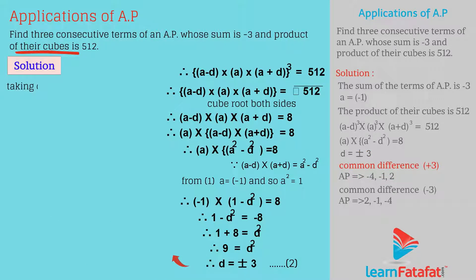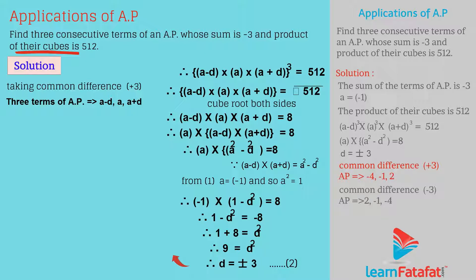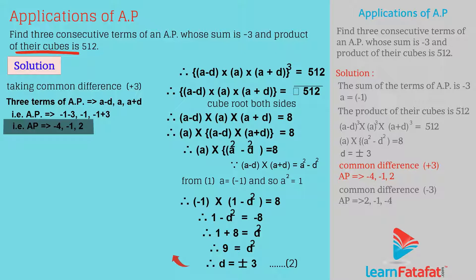Taking common difference d equal to plus 3, we get the 3 terms of the AP as a minus d, a, a plus d — that is, minus 1 minus 3, minus 1, minus 1 plus 3 — which gives the AP as minus 4, minus 1, 2.